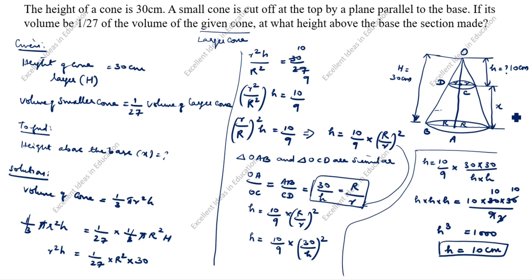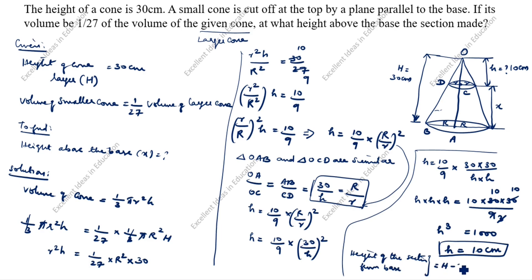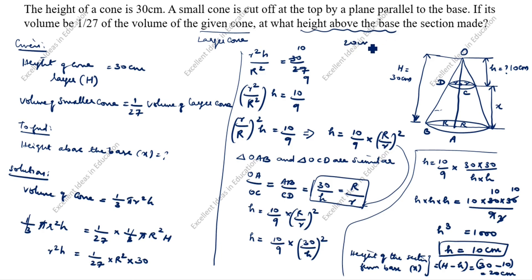We need the height above the base. The height of the section from the base equals big H minus small h. So x = 30 minus 10, which gives 20 centimeters. The height above the base is x = 20 centimeters. Thanks for watching this video.